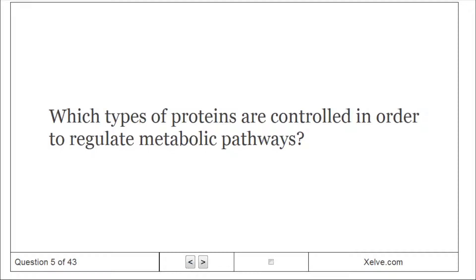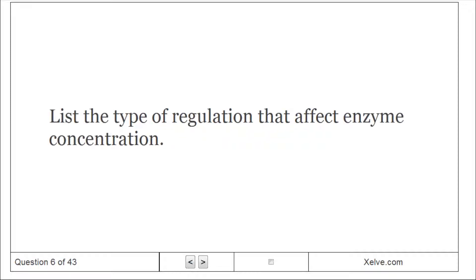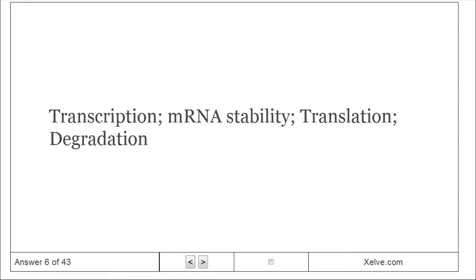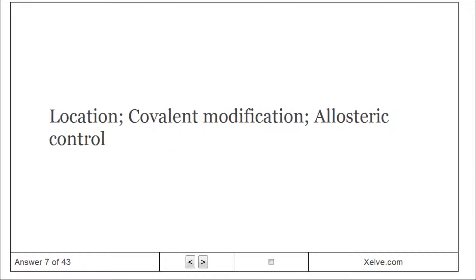Which types of proteins are controlled in order to regulate metabolic pathways? Enzymes. List the types of regulation that affect enzyme concentration: transcription, mRNA stability, translation, degradation. List the types of regulation that generally have rapid control and short-term effects: location, covalent modification, allosteric control.